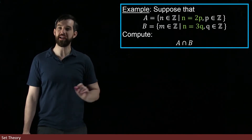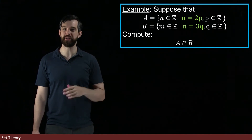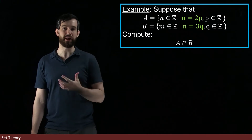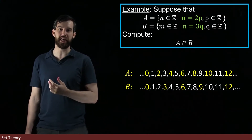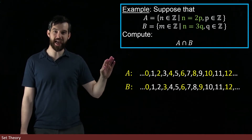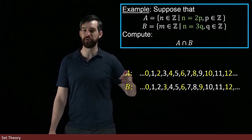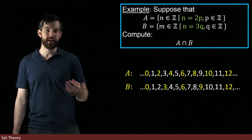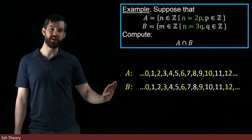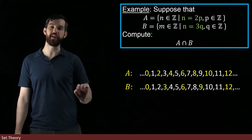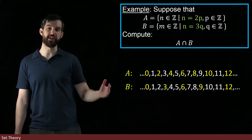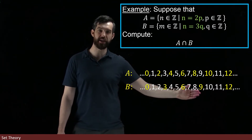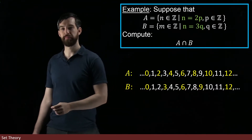I can do the same trick where I highlight the integers that are relevant here. In the case of A, I highlight all of the even integers: 0, 2, 4, and so on. And in the case of B, I've highlighted in yellow all of the multiples of 3: 0, 3, 6, 9, 12, and so on.